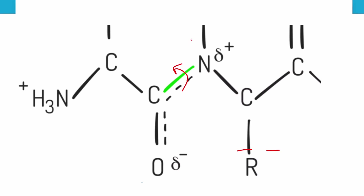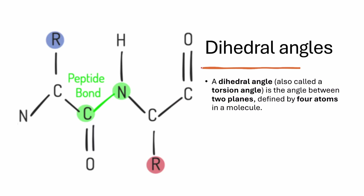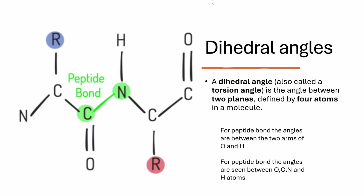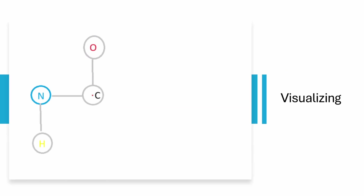Nitrogen and hydrogen are on one side while oxygen is on the other side — this is the trans configuration, where two groups are on opposite sides. The peptide bond is fixed at a 180-degree dihedral angle. A dihedral angle is calculated between four atoms: hydrogen, nitrogen, carbon, and oxygen — it is the angle between two planes.